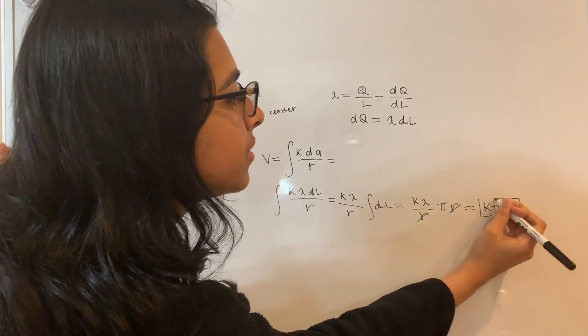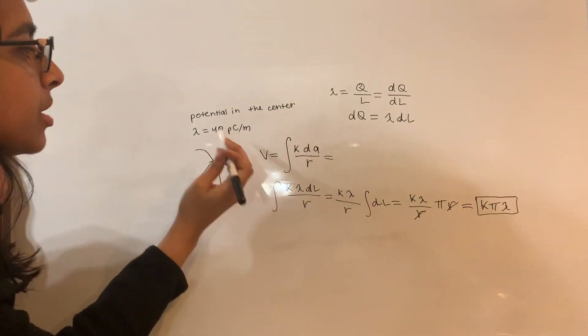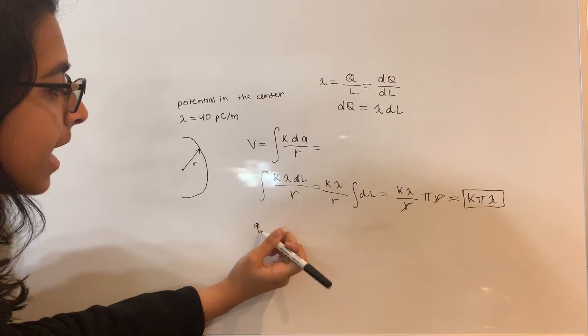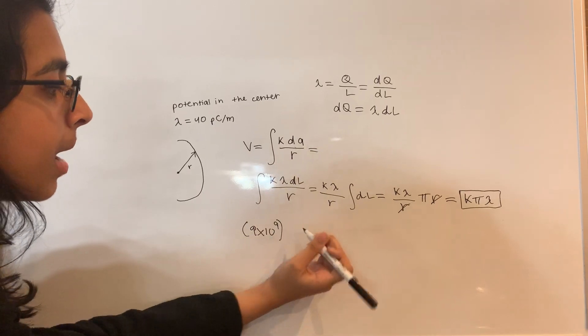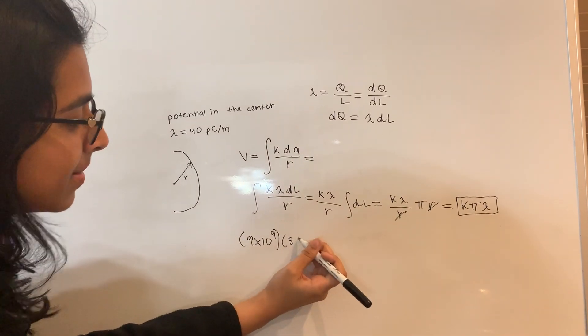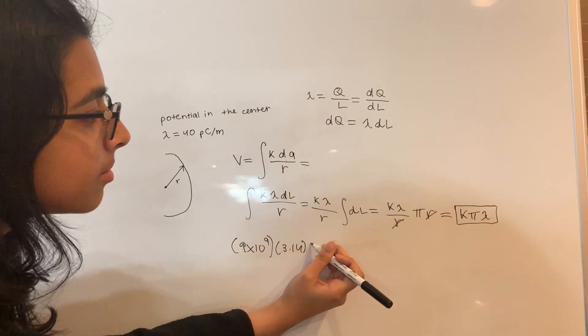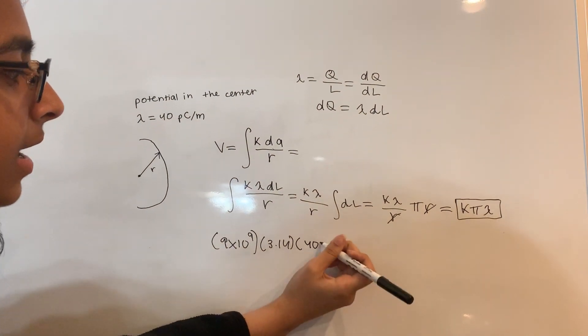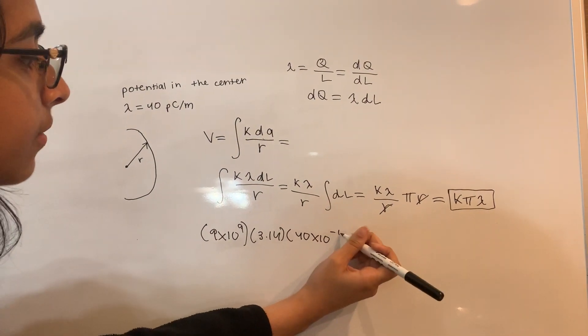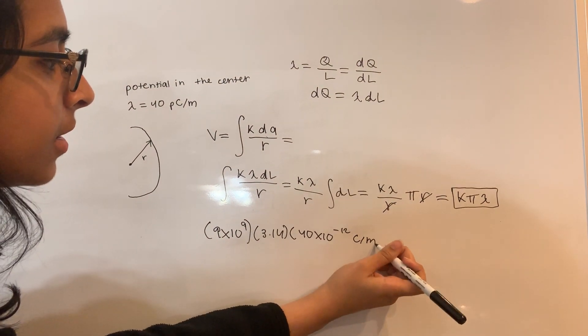So now all we have to do is plug in these numbers that we have. So k is a constant that's going to be 9 times 10 to the 9th times pi, which is approximately 3.14, times this lambda, which we're given, which is 40 times 10 to the negative 12 coulombs per meter.